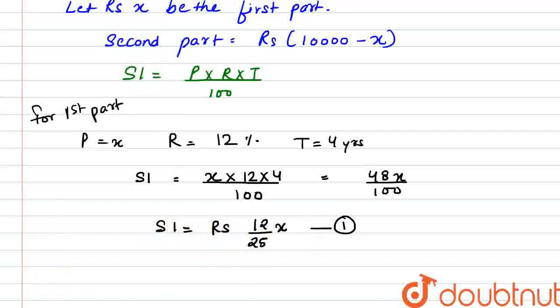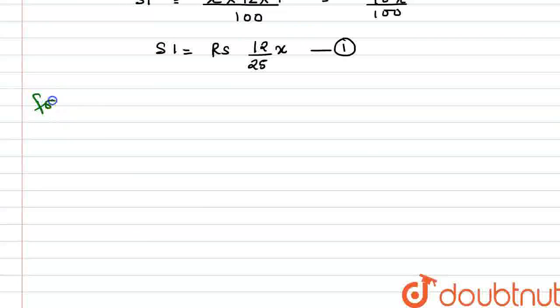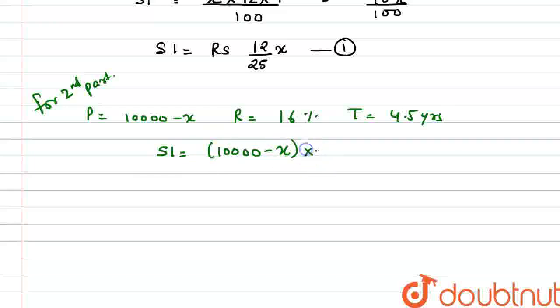Similarly, we can take it for the second part. Our principal amount will be 10,000 minus x. Rate of interest is 16% and time is 4.5 years. So our simple interest will be 10,000 minus x multiplied by r is 16 multiplied by t is 4.5 and divided by 100.